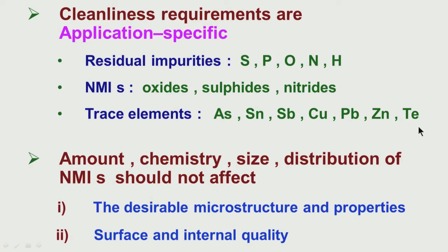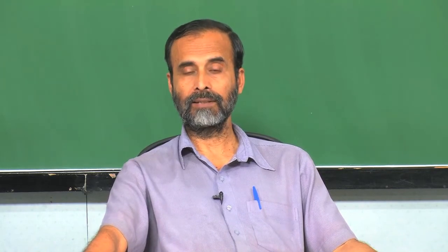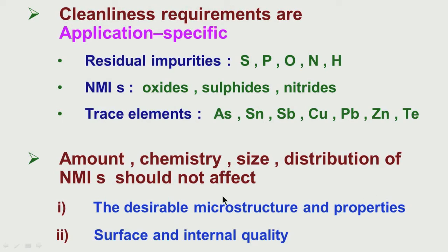These trace elements are essentially coming from the scrap used for making steel. So we have to be careful about the source of the scrap from which these are getting incorporated. The non-metallic inclusions — their amount, their volume fraction, their chemistry (whether oxide, sulphide, or oxysulphide, and what type), their size, and their distribution — all these issues are very important and will influence the microstructure and consequently the properties of the steel. We have to be very careful, because if they are present beyond certain limits, they can affect the surface as well as the internal quality of the steel component.